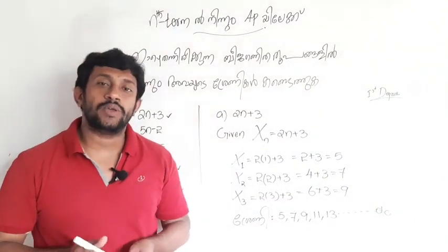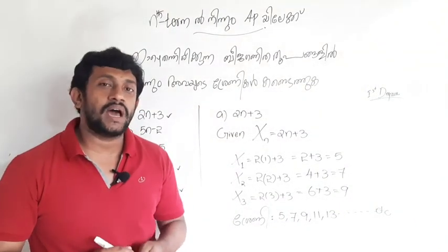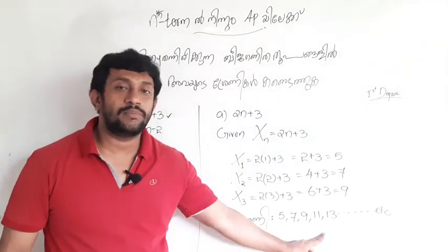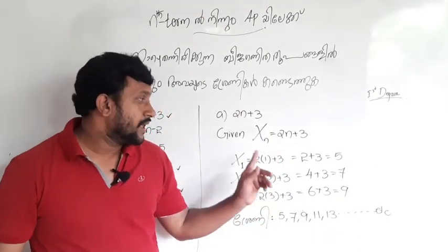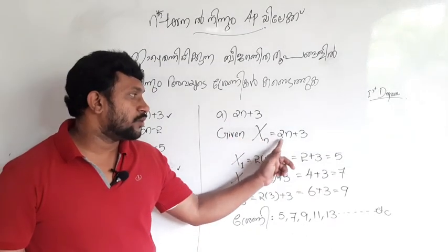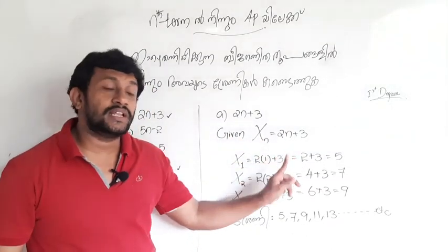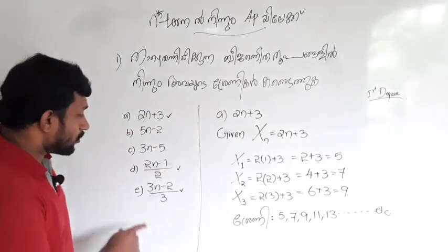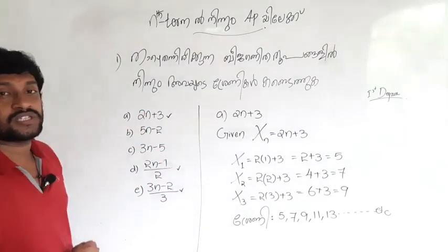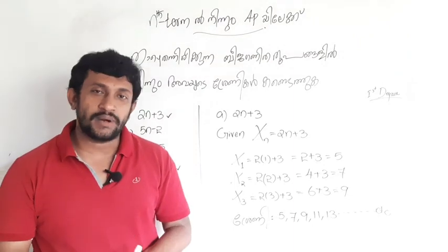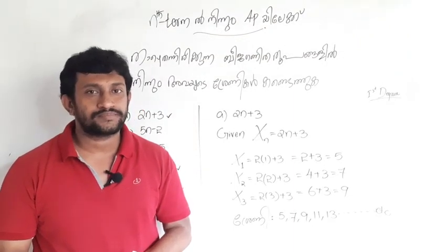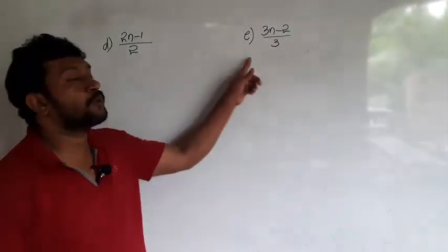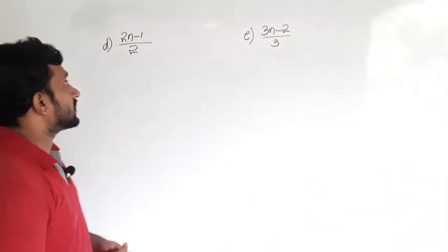We read how we can find out an arithmetic sequence. How many times do we think about it? We are also thinking about this. Did we read this? Did we write our words or write our homework?